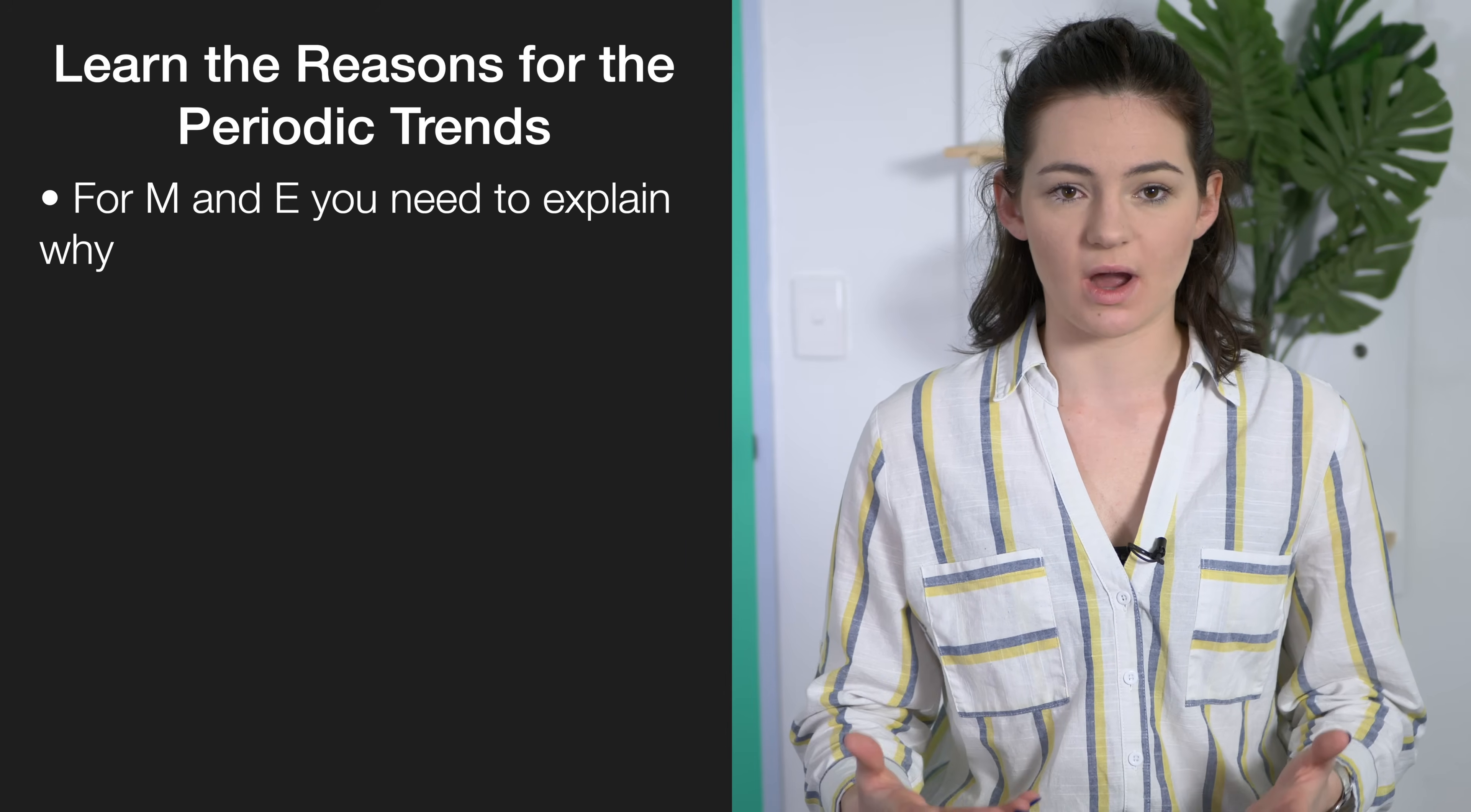In this standard it's important to know your periodic trends. While you should be able to say that the atomic radius increases as you go down a group and it decreases across a period, if you want to reach for those merit and excellence marks you'll have to explain why.